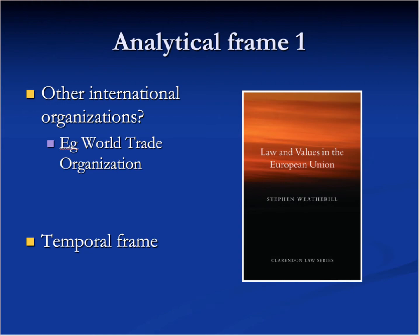The third state introduces repressive measures against a minority group, and many members of that group flee its territory, forcing a neighbouring fourth state to set up large refugee camps to accommodate them. The fourth state has lately cut its tax rates applicable to companies and abolished many rules setting health and safety standards for the workplace, as well as repealing laws setting a minimum wage. A neighbouring fifth state finds that several firms based on its territory have chosen to move their headquarters to the fourth state, where their operating costs are consequently much lower. The fifth state has introduced strict new laws designed to ensure secrecy in the banking sector. A neighbouring sixth state fears that this has made it much easier for criminals to conceal the pathways through which they transmit their ill-gotten gains, thereby making the detection of crime much harder.